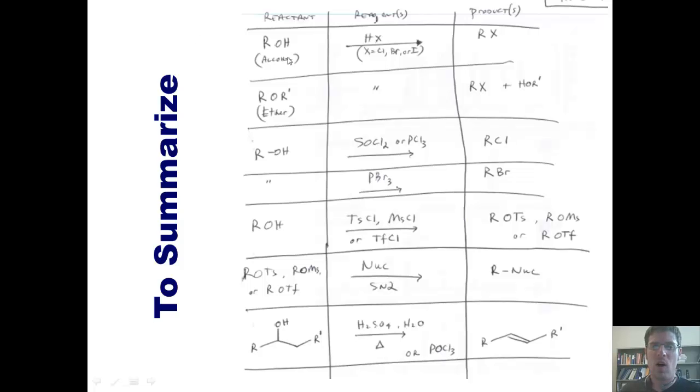If you take an alcohol and react it with HX, it replaces the OH with an X, where X is equal to chlorine, bromine, or iodine. Similarly, if you take an ether and treat it under the same conditions, it will form RX and an alcohol. The X could bond to the R group on the left or the right, depending on the individual mechanism. So be careful when you're looking at a specific example.